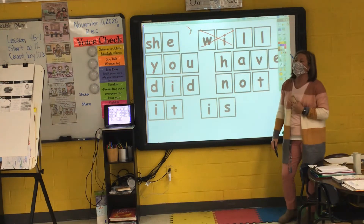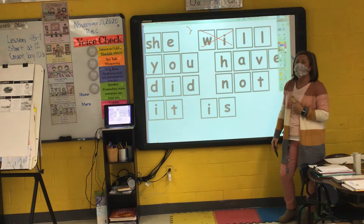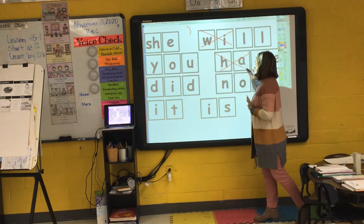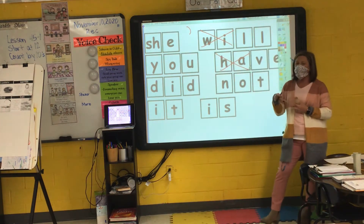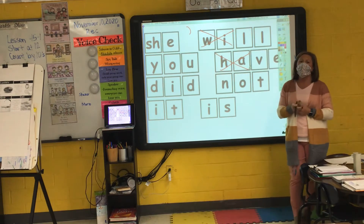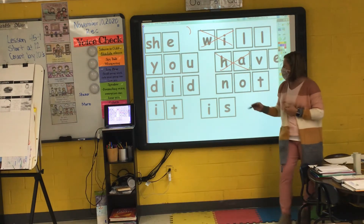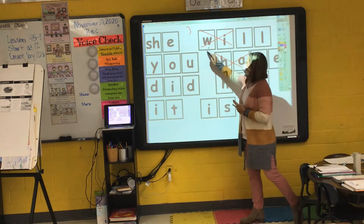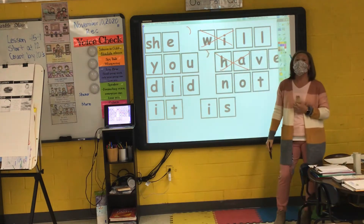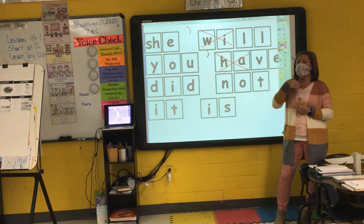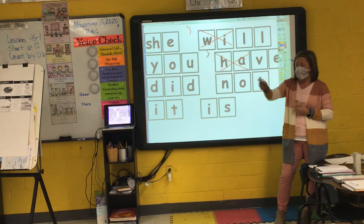My next two words are 'you' and 'have.' I'm going to take away the H-A. What will I replace the H-A with? An apostrophe — and I get the contraction 'you've.' I say it, you say it: 'you've.'